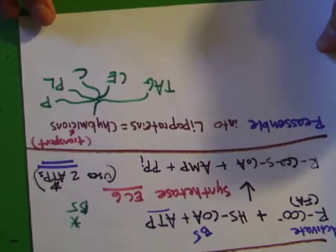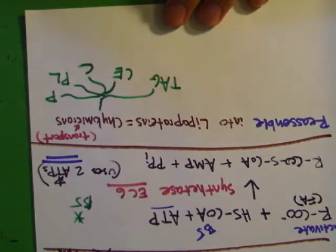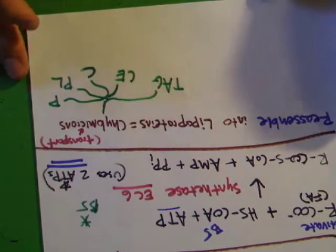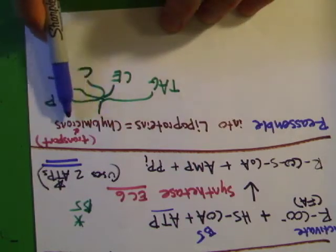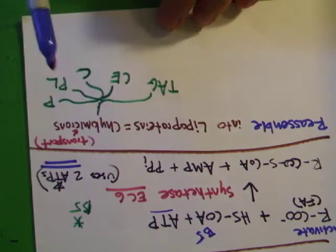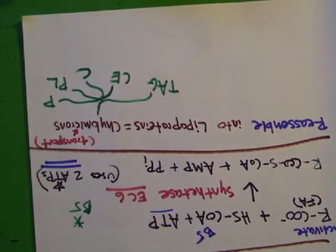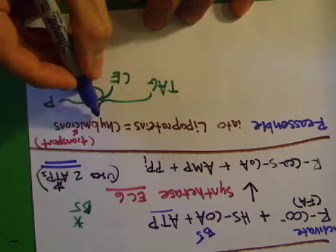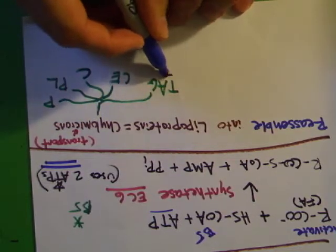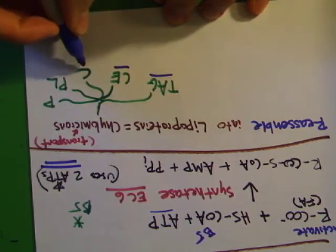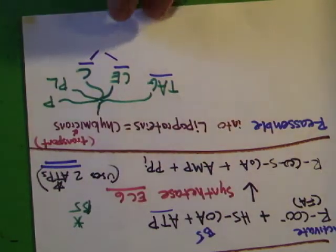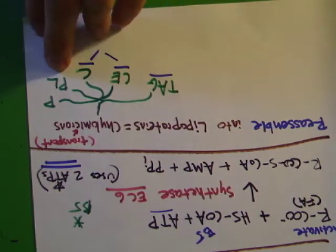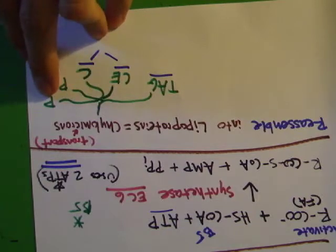Now that you have the activated fatty acids, you're going to reassemble them into lipoproteins. Chylomicrons are the type you reassemble them into in your blood, then take to the liver. The components of chylomicrons are triglycerides, cholesterol esters, and cholesterol — which you can combine to get total cholesterol — plus phospholipids and protein.